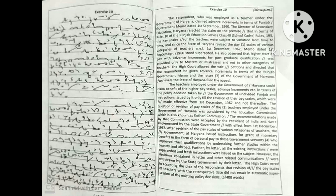the memo dated 1st September 1960 stood superseded. He also observed that higher start of pay with advance increments for post-graduate qualification was provided only to masters or mistresses and not to other categories of teachers. The High Court allowed the writ petitions and directed that the respondent also be given advance increments in terms of the Punjab Government memo and the letter of the Government of Haryana. Aggrieved, the State of Haryana filed the appeal.